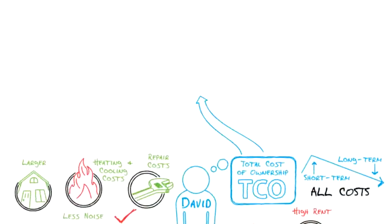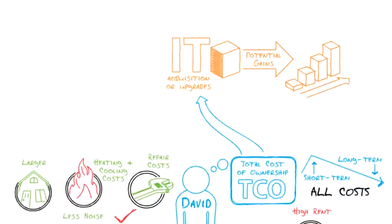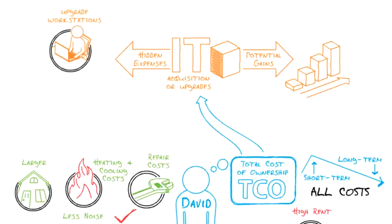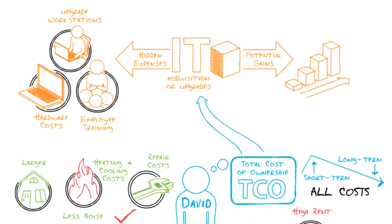TCO is most often calculated when considering IT acquisition or upgrades. The benefit of potential gains in productivity might tempt a company to upgrade a software application. However, there could be hidden expenses such as upgrading workstations, which takes time out of a workday and ties up IT support staff; discovering that some computer hardware is incompatible with the new application, which adds hardware costs; and training employees on the new application, which causes a short-term drop in productivity.